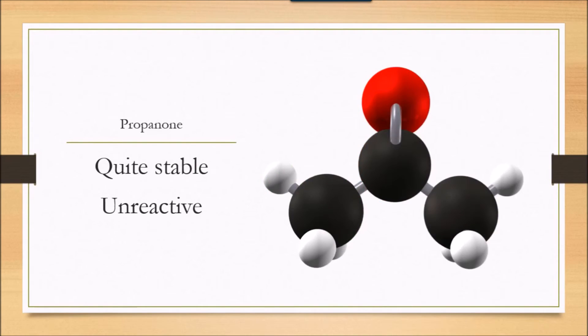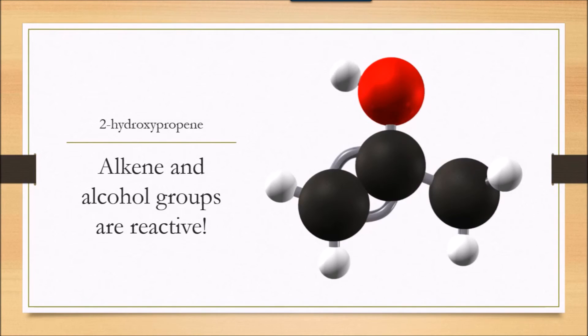In this case, the propanone is more stable than 2-hydroxypropene under normal conditions. Propanone is not very reactive, as I said before, but 2-hydroxypropene has a double bond and a hydroxyl group. It will react with things like bromine water, potassium dichromate, and people's livers. So it's not as stable.